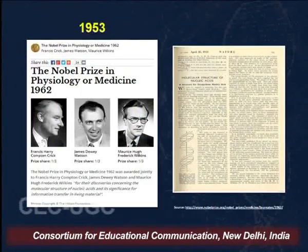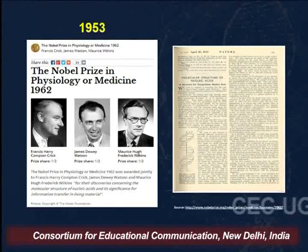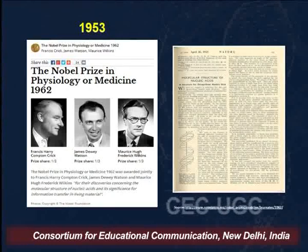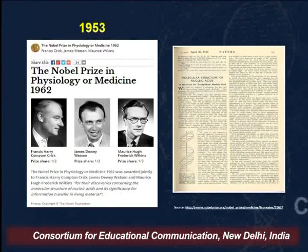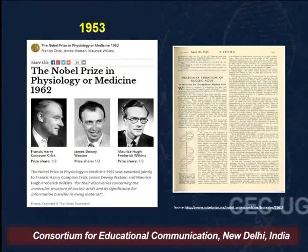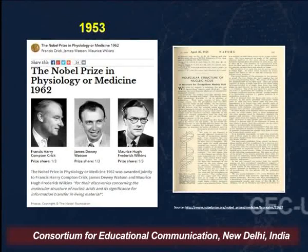The next important discovery was in 1953 when scientists Watson, Crick, and Wilkins published a paper in Nature announcing the structure of the DNA double helix — deoxyribonucleic acid. For this work, all three were awarded the Nobel Prize in Physiology or Medicine in 1962. The image on the right-hand side shows a snapshot of the paper they published in Nature in 1953.